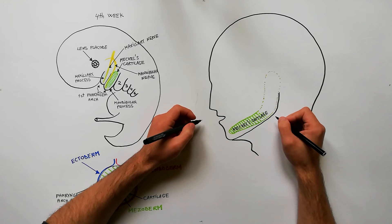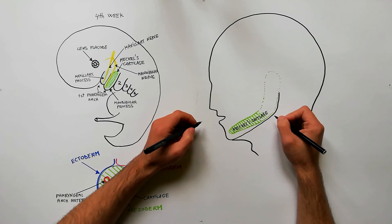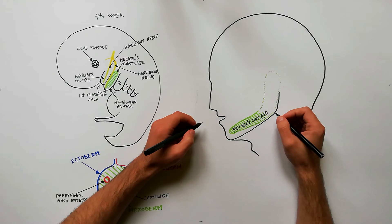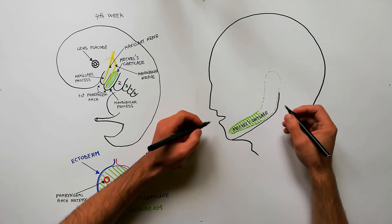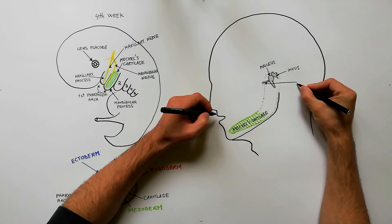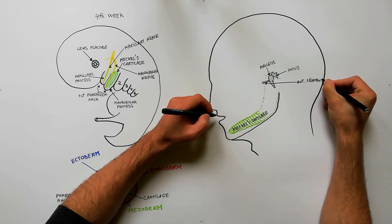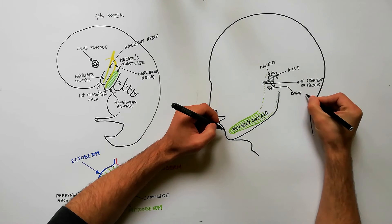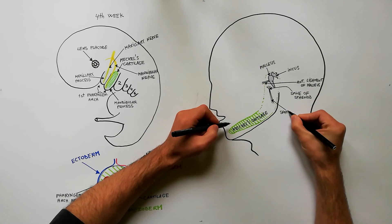Most of the Meckel's cartilage degenerates with the exception of its dorsal portion which will give rise to malleus, incus, anterior ligament of malleus, spine of sphenoid bone and sphenomandibular ligament.